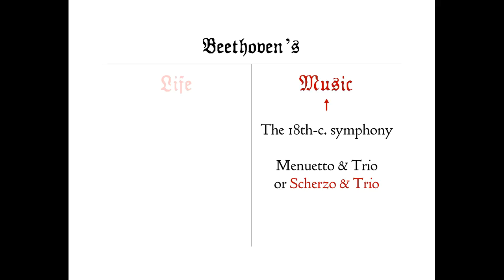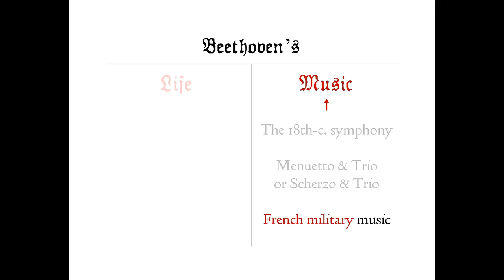We also briefly examine two unfamiliar but important influences on Beethoven's symphonic style: French military music and the operas of Luigi Cherubini. Then we will consider the questions: why is Beethoven's second symphony significantly more interesting than his first, and how does it foreshadow his subsequent towering achievements in the symphonic genre?